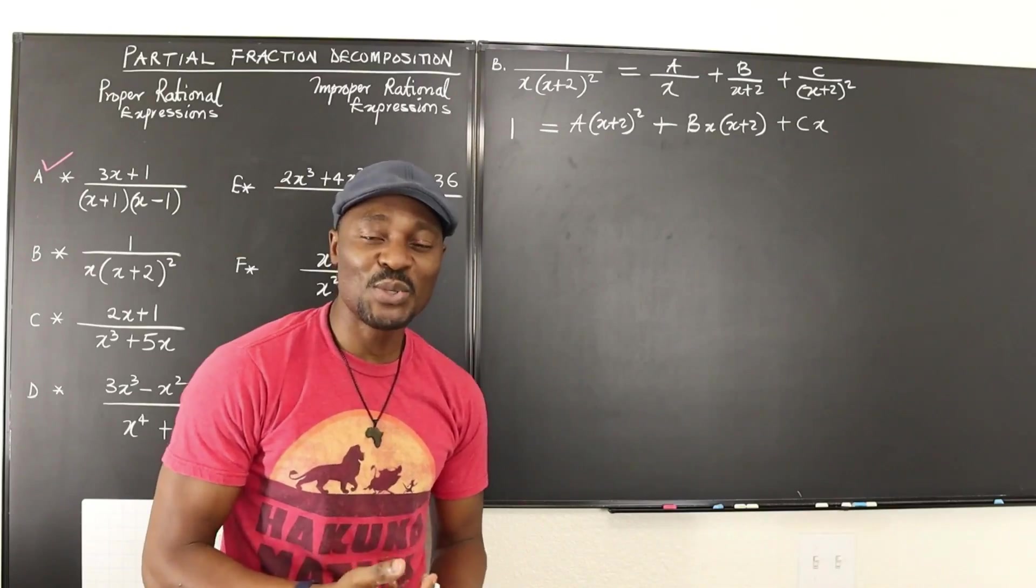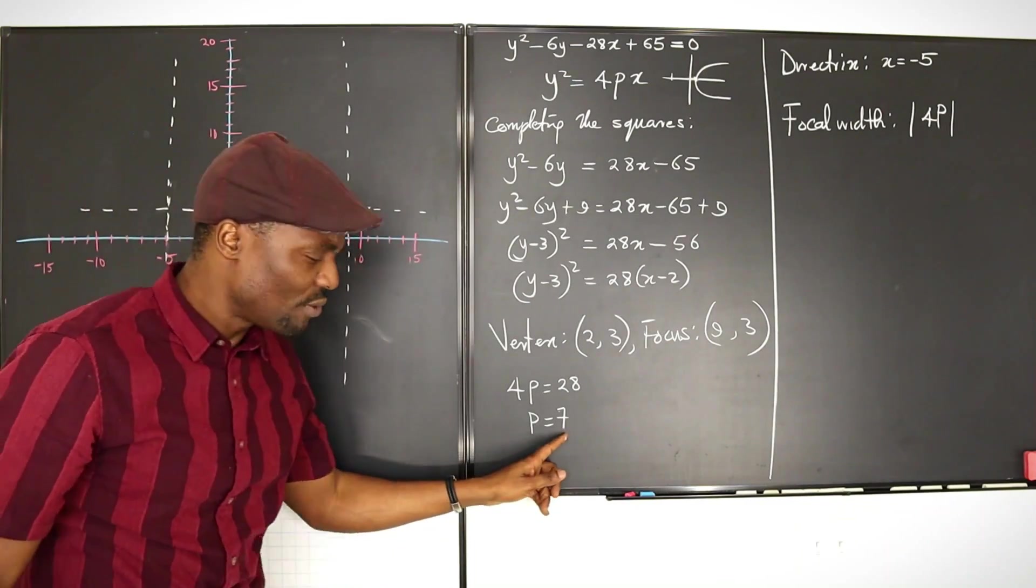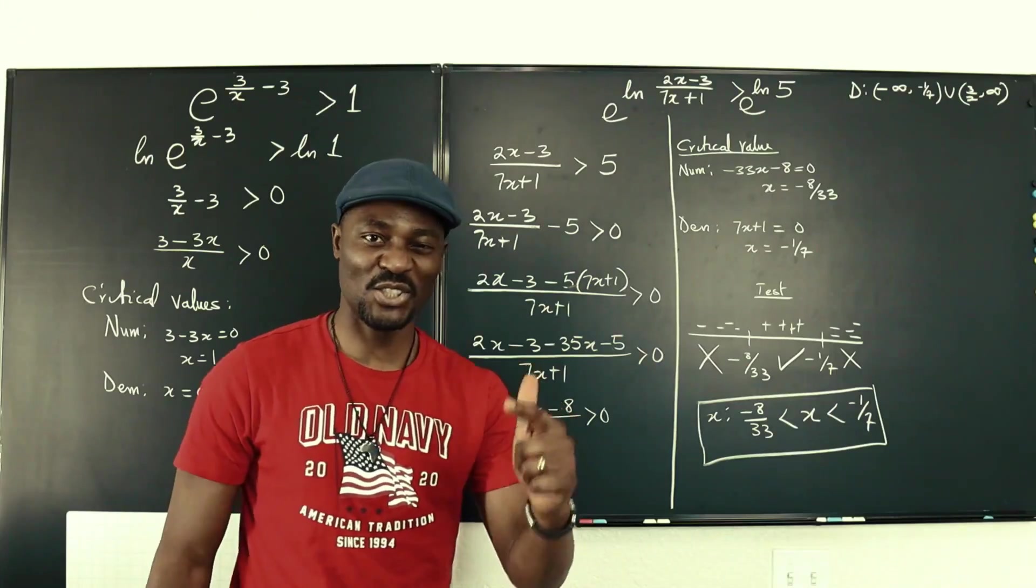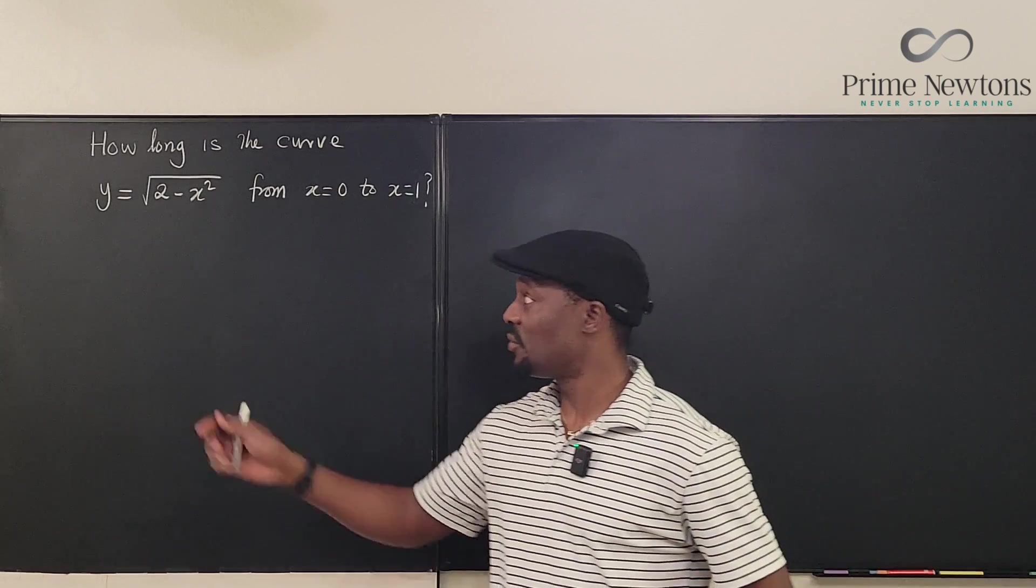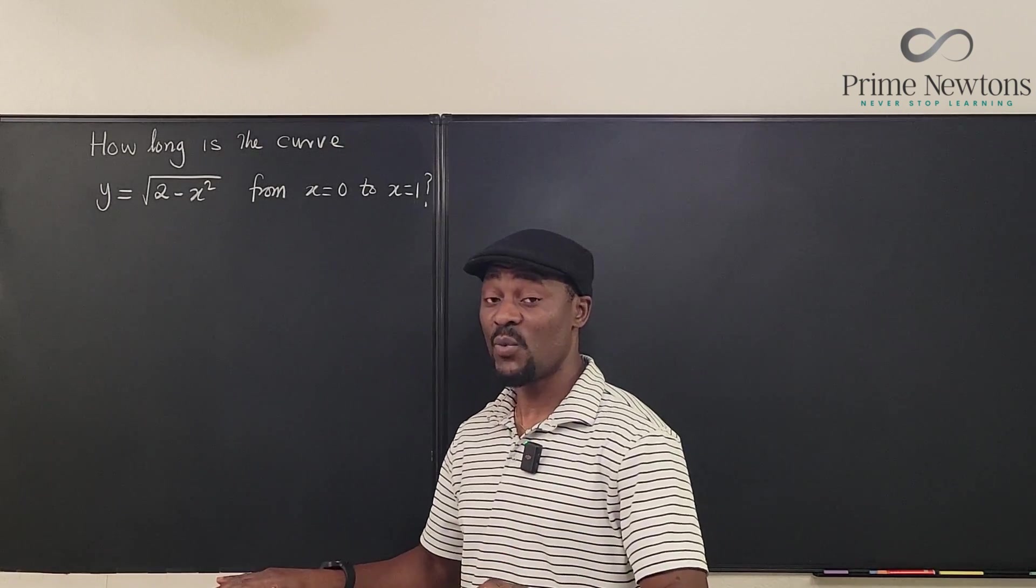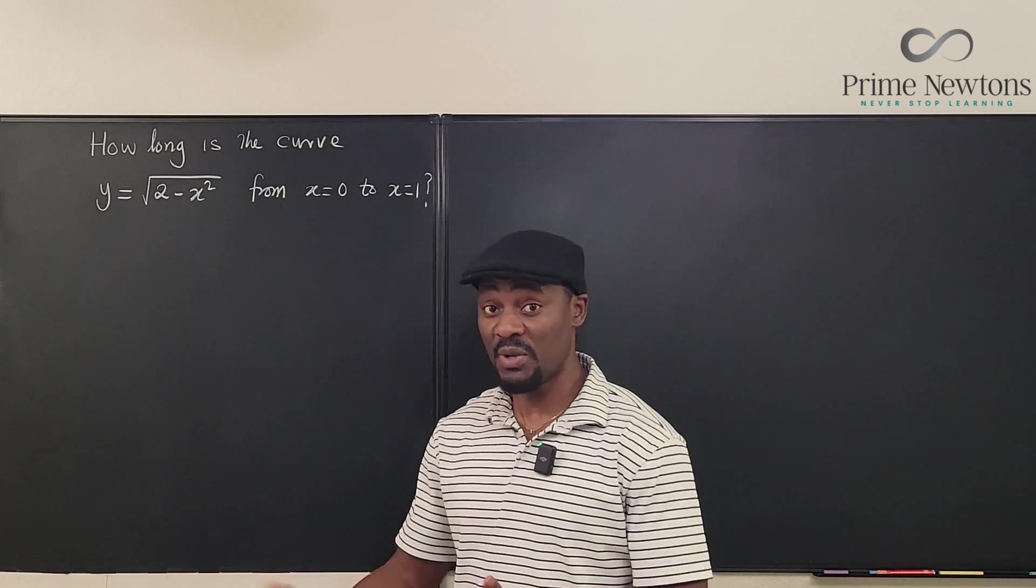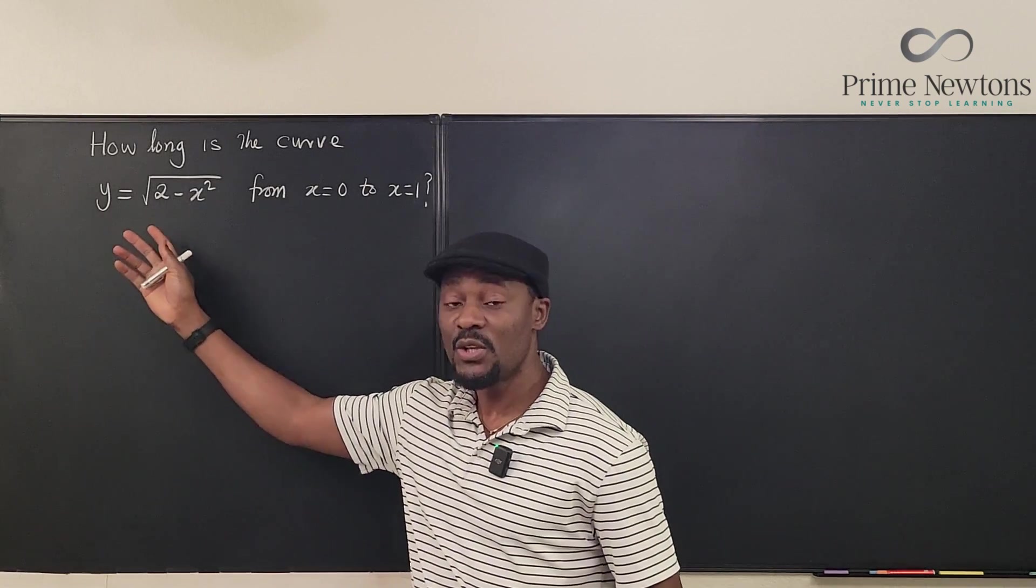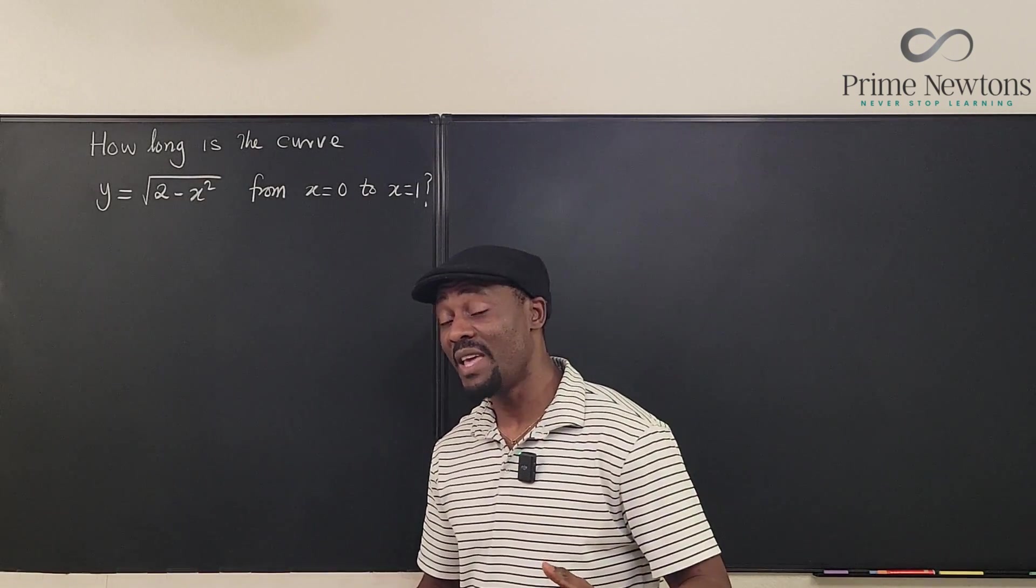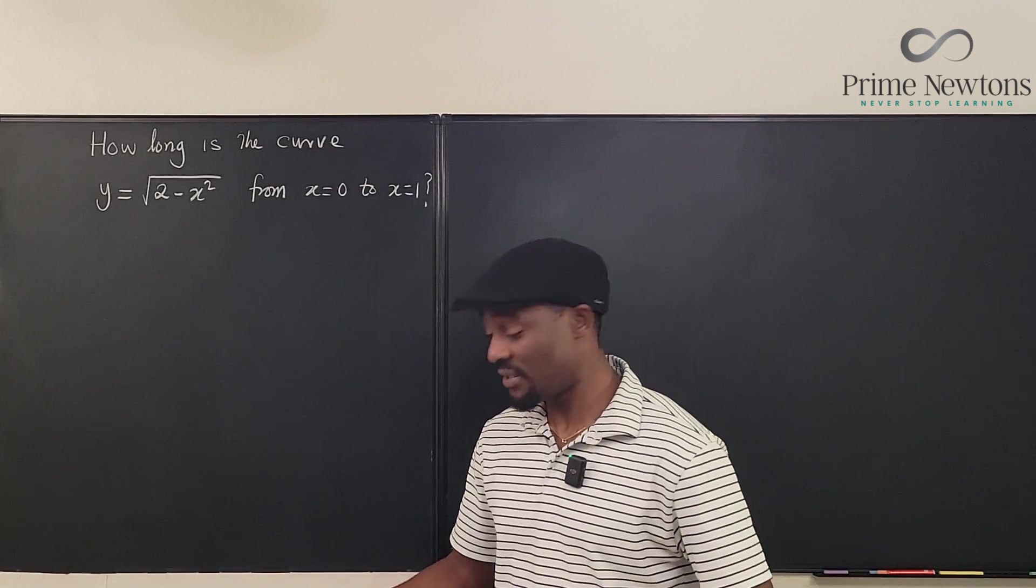Let's get into the video. Because the function we're given is written as y as a function of x, the formula you'll be using will be using dy/dx. But sometimes you may need to rewrite the formula or rewrite the function so that you write it as x as a function of y and you'll be using dx/dy. But in this case it looks as if dy/dx is going to work out for us. So that's what we're going to use as a formula.